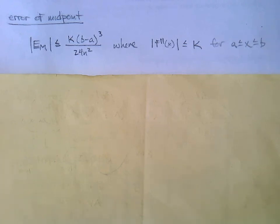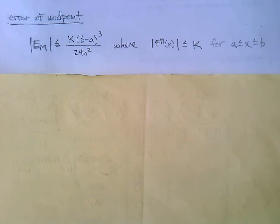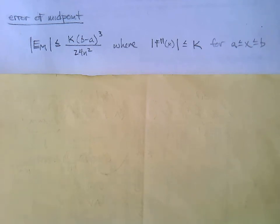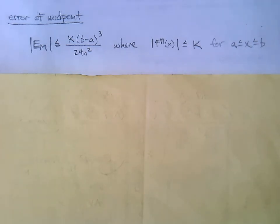The last concept when it comes to approximate integration — numerical integration — is the error for each of our three methods. Starting with the error of the midpoint: whenever you do numerical integration, you know your answer isn't exactly right, but it's usually close enough to get the job done. You always want to assess the maximum possible error to guarantee your findings and ensure you're within a certain tolerance of the exact value.